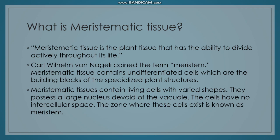Meristematic tissue cells have different shapes. We have a lot of rod shape, cone shape, ribbon shape, and other shapes. The cells possess a large nucleus — the nucleus is the brain of the cell.